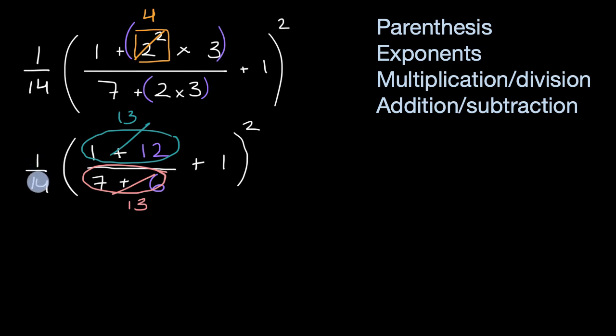So we have one-fourteenth or one divided by 14 times this whole thing squared. And inside here, I have 13 divided by 13 plus one. Well, we know we need to do division before we do addition. So we will want to evaluate this part before we do the addition. What is 13 divided by 13? Well, that's just going to be equal to one.